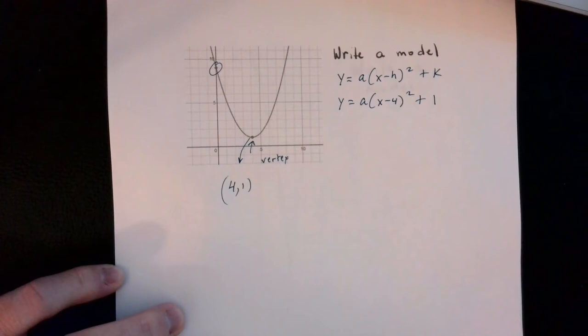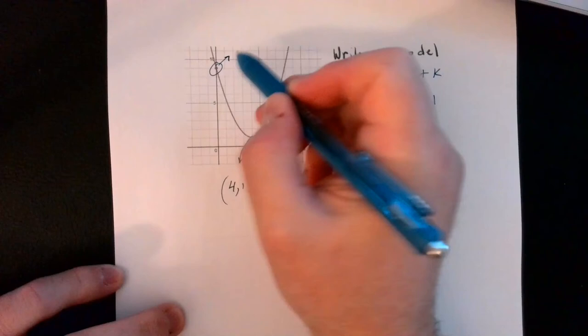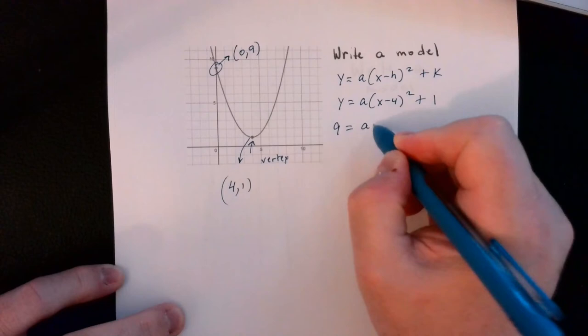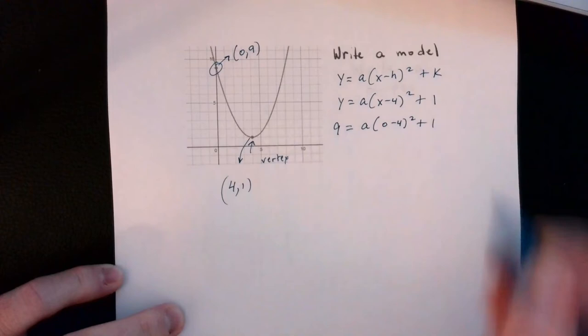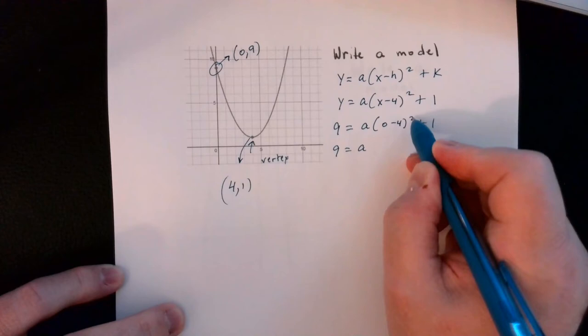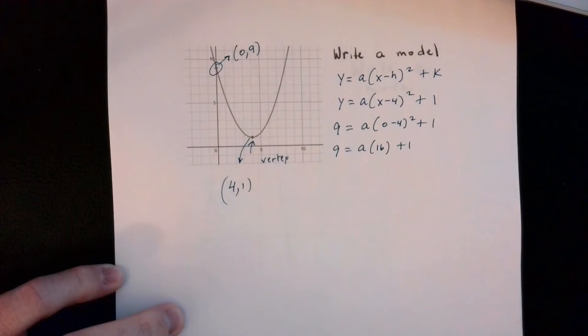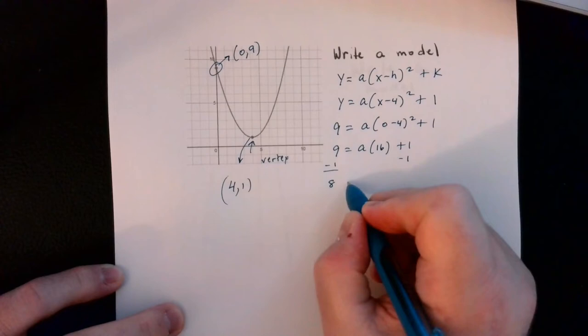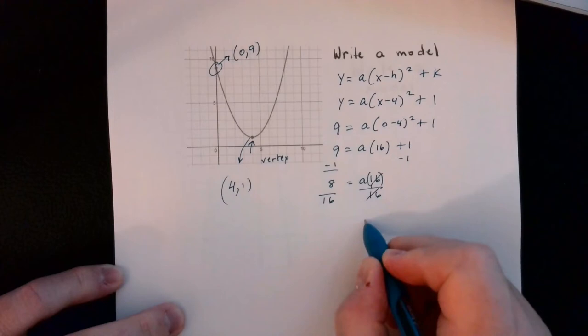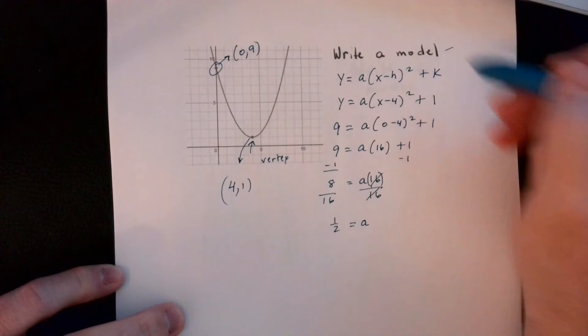To find a, I use the additional point at (0, 9). Substituting: 9 equals a times (0 minus 4) squared plus 1, which gives 9 equals 16a plus 1. Subtracting 1 gives 8 equals 16a. Dividing by 16 gives a equals one-half.